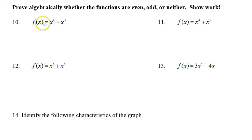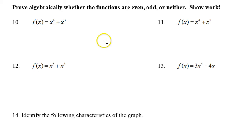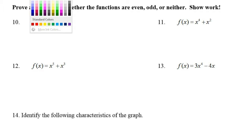Simply, if all of the exponents are even, then the graph will have even symmetry. If all the exponents are odd, then we're looking at odd symmetry. If there's a mixture of even and odd exponents, then it's going to be neither. But that's not a proof. However, it will help us to know ahead of time what the answers are.